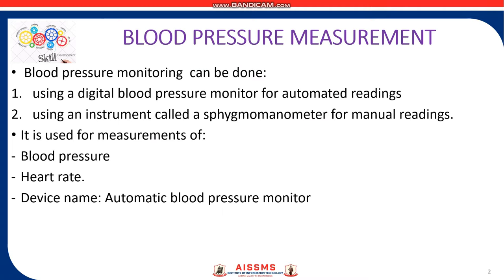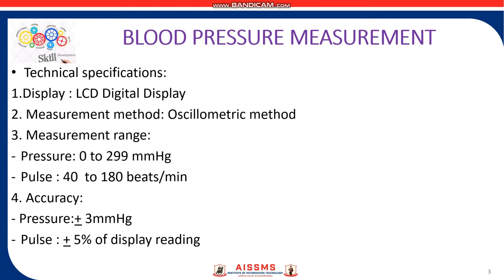Blood pressure monitoring can be done either by using an automatic digital blood pressure monitor or by using an instrument called a sphygmomanometer, which gives manual readings. The device also measures heart rate. The technical specifications of the device include an LED LCD digital display. The oscillometric method is used for measurement. The pressure measurement range is from 0 to 299 mmHg and for pulse it is 40 to 180 beats per minute.